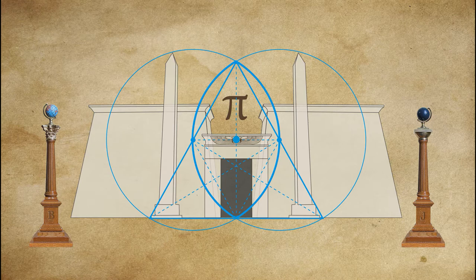Where the two circles overlap, they create that oval shape known as the vesica pisces, which represents the doorway or the birthplace of all things into the physical world. Within these three shapes, a perfect equilateral triangle is formed, which represents the law of three — the driving power that is the cause behind all things in the universe.